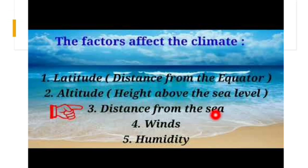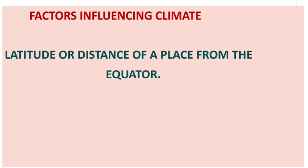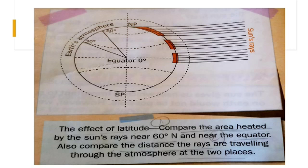Now let us know this in detail. Latitude or distance of a place from the equator: places located near the equator receive the direct rays of the sun. Since the rays are stronger, the places near the equator are hotter than the places which are at high latitudes.